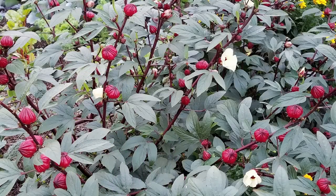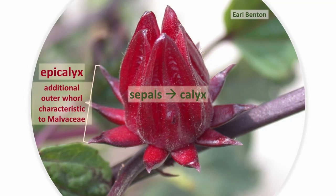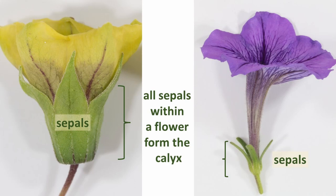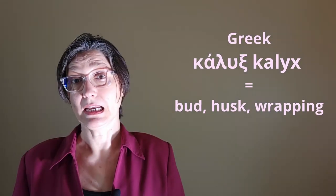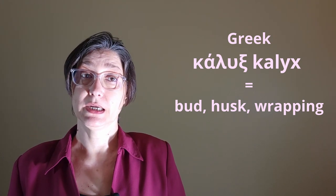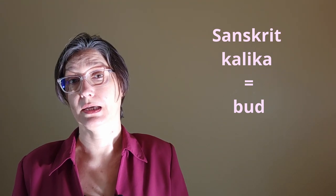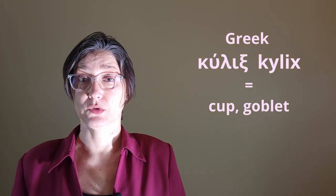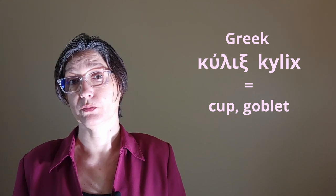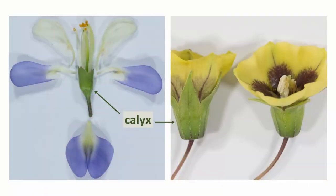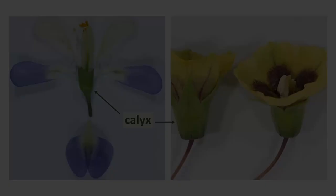The plant parts of Hibiscus sabdariffa that might be the most intriguing are their red fleshy calyxes. The calyx is the sum of all sepals within a flower. The sepals, most commonly green, form a protective layer around the flower in bud. The word calyx is derived from Greek, meaning bud, husk, or wrapping. In Sanskrit, kalika also means bud. The word calix, with an I instead of a Y, is also from Greek kylix, meaning cup or goblet. And most times, the shape of the calyx in a flower has the shape of a cup or goblet.